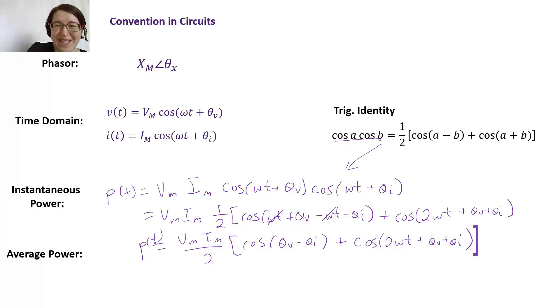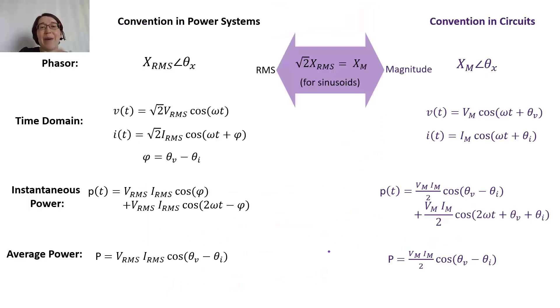A little bit messy. And when we want the average power, again the cosine term that is dependent on t will go to zero. So we'll just be left with the other, the first term, so VM IM over two times cosine theta V minus theta I. So let's look at these two just compared to each other.